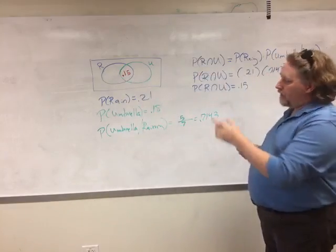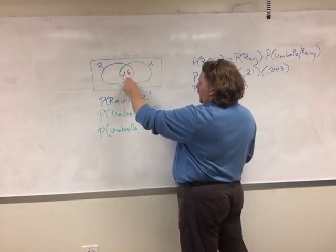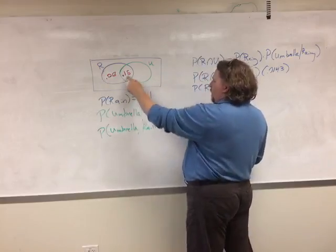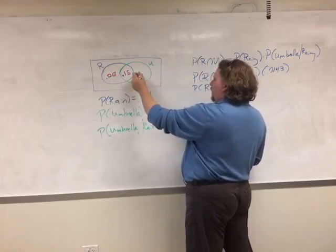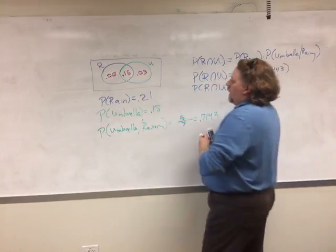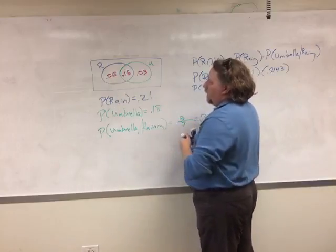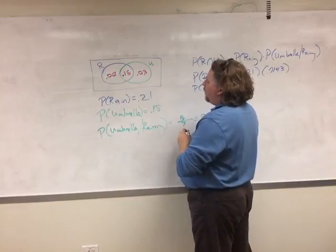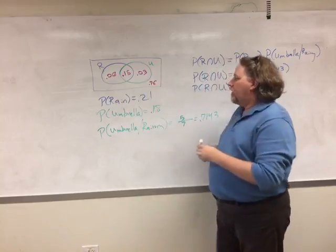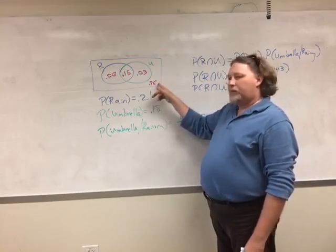I can subtract to find the other regions: .21 minus .15 gives .06 for the rain-only part; .18 minus .15 gives .03 for the umbrella-only part. Adding those together, .21 plus .03 is .24, so the region outside both circles — not raining and I didn't bring an umbrella — is .76.